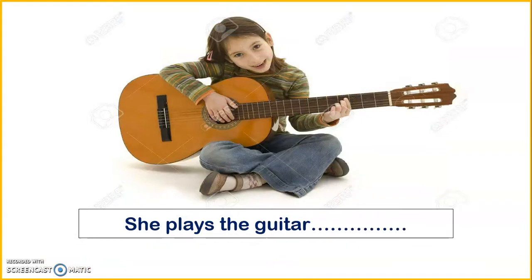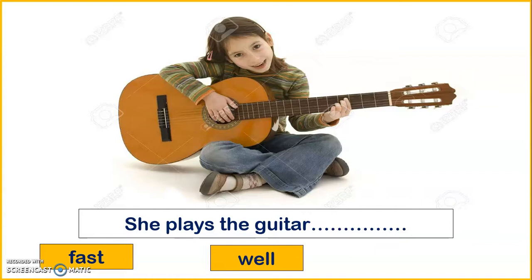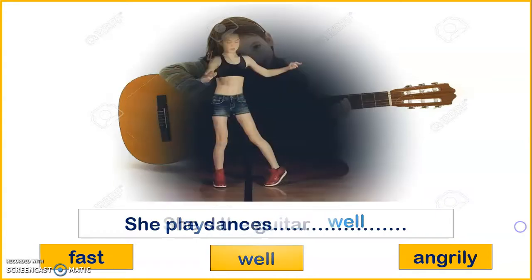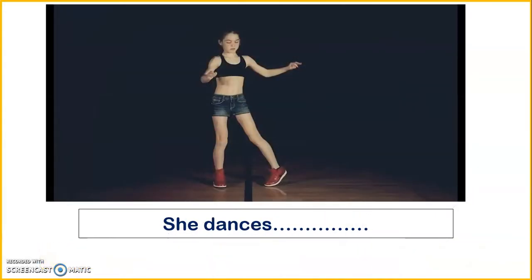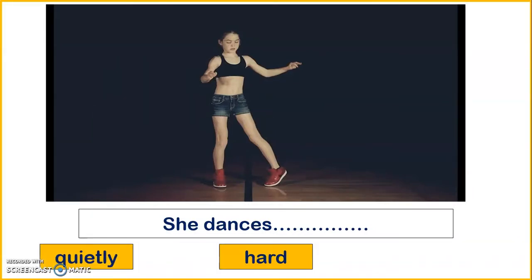She plays the guitar — fast, well, or angrily? That's right: she plays the guitar well. Very good. Next picture: she dances — quietly, hard, or badly? That's right: badly. Good answer.